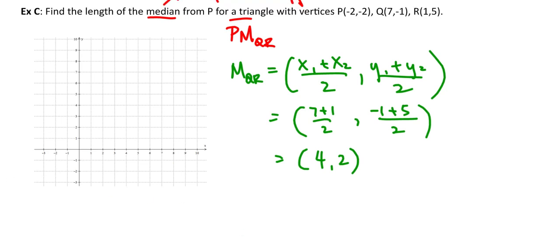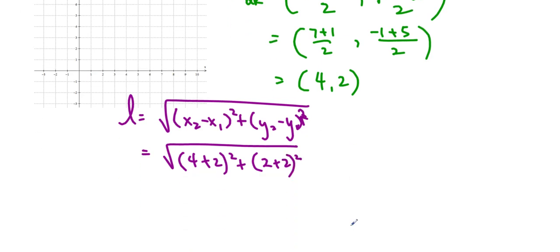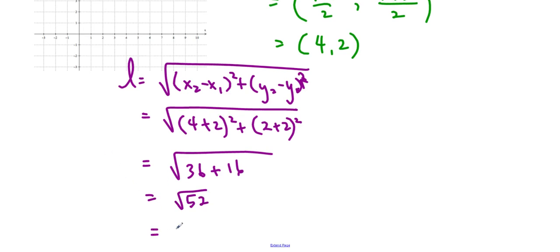So the length is going to be √((x₂ - x₁)² + (y₂ - y₁)²). I'll just fill in the numbers. So (4 - (-2))² + (2 - (-2))², which gives us √(6², 36, + 4², which is 16). So we get √52, and I can simplify that to 2√13.